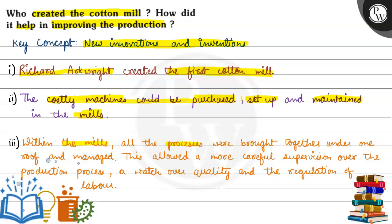Third point is, within the mills, all the processes were brought together under one roof and managed. This allowed more careful supervision over the production process, a watch over quality and the regulation of labor. The biggest benefit of cotton mills is that the production process was centralized under one roof.